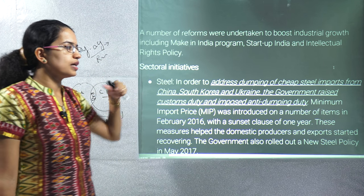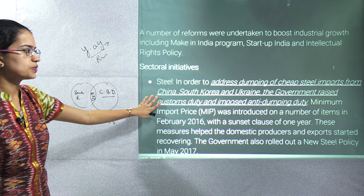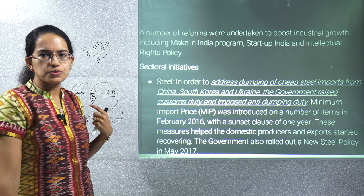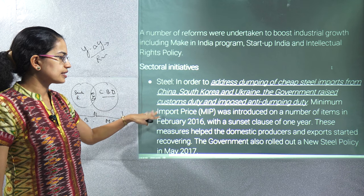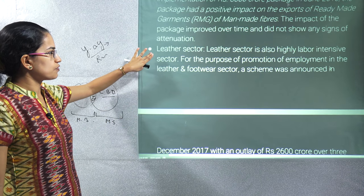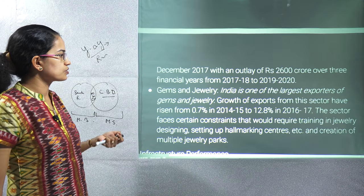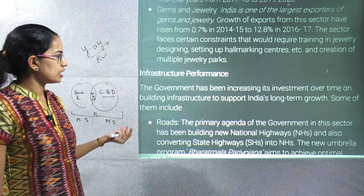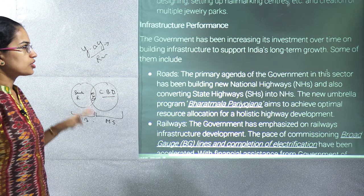We are addressing the issue of dumping of cheap steel imports from China, South Korea, and Ukraine. The government is trying to raise anti-dumping duty and customs duties on these. We also have the leather sector as a labor-intensive sector, and gems and jewelry where India is one of the largest exporters.